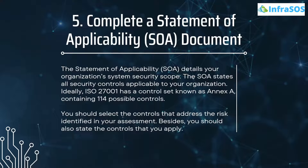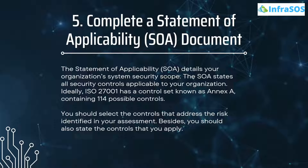Number five is to complete a Statement of Applicability, known as the SOA document. The SOA details your organization's system security scope and states all security controls applicable to your organization. The ISO 27001 has a control set known as Annex A, containing 114 possible controls. You should select the controls that address the risks identified in your assessment and also state the controls that you apply.